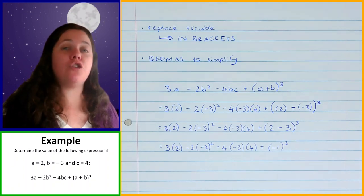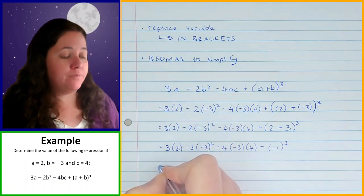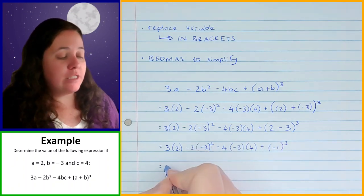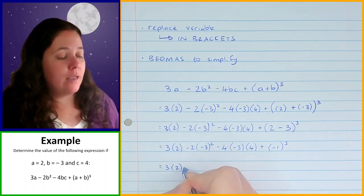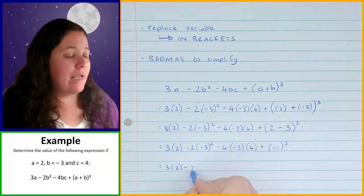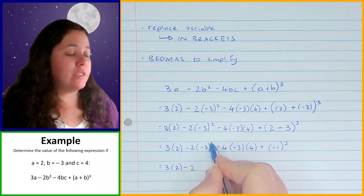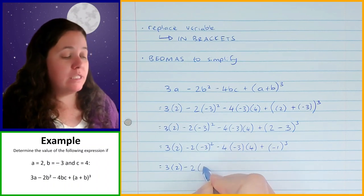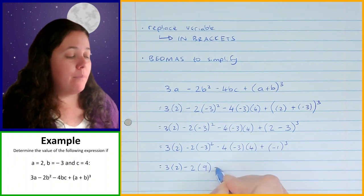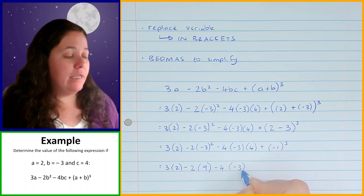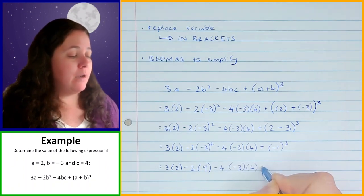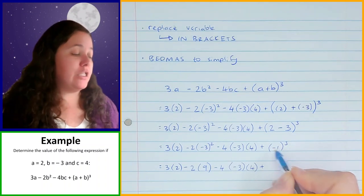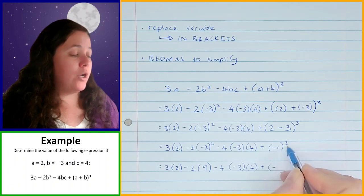Now I'm going to move on to the E, which is exponents. I've got an exponent here and an exponent here to sort out; everything else stays as it is. Minus 2 times negative 3 squared — because this is an even exponent, this becomes positive, so it's positive 9. Then plus negative 1 cubed — an odd exponent means this stays negative, and 1 cubed is just 1, so that's negative 1.